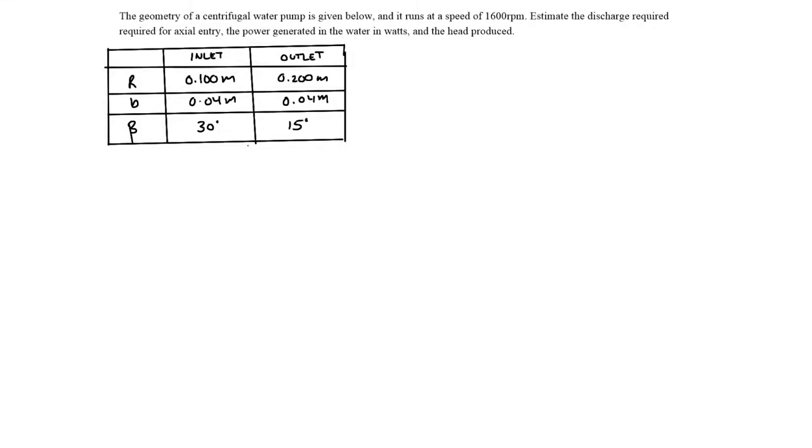In this video we're going through another turbo machine problem, in this case another centrifugal pump. The problem statement says the geometry of a centrifugal pump is given below and it runs at a speed of 1600 rpm. Estimate the discharge required for axial entry, the power generated in the water in watts, and the head produced.